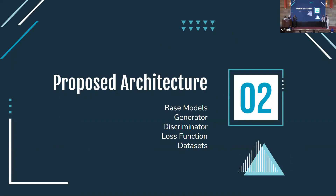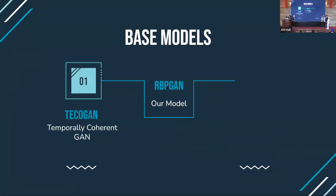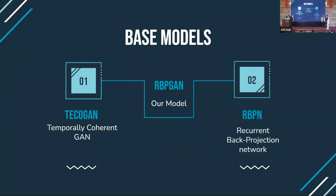Now for the proposed architecture, we'll go through the base models — which are the generators and the discriminator — the loss functions, and the dataset. We have two main base models: the TQGAN, which stands for Temporal Coherent GAN, and the RBPN, which stands for Recurrent Back-Projection Network.